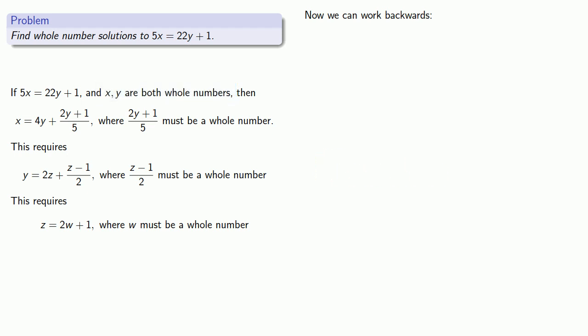And what this means is we can choose any whole number we want for w. So let's pick w equals 0. If w equals 0, then we'll find z, because z is 2w plus 1, so z is equal to 1.